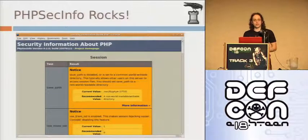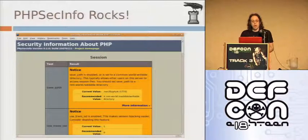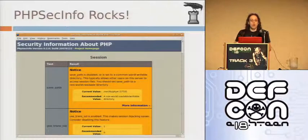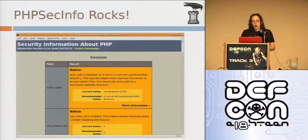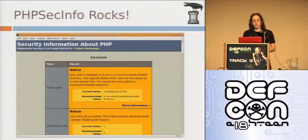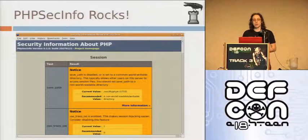PHP's default configuration is horribly insecure. One thing it has is display_errors equals on, and this allows the attacker to test your application for SQL injection or even find remote paths. There are other problems with PHP's default config on every platform I've ever looked at. On a development system in most cases that's okay, but on a production level system you must run PHPsecinfo. PHPsecinfo is a very simple PHP script that goes through your configurations and tells you what's wrong. If there's any red in your PHPsecinfo, you have to remove it - and you should remove as much yellow as possible.